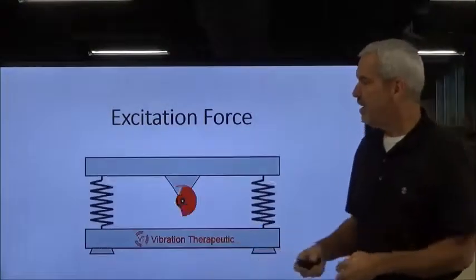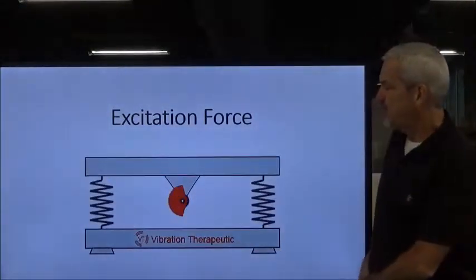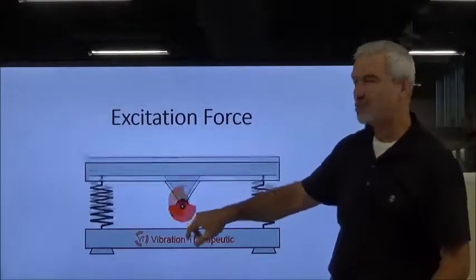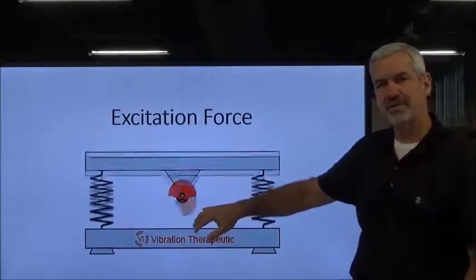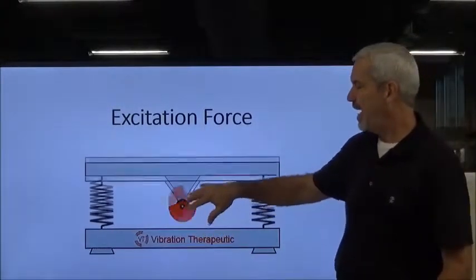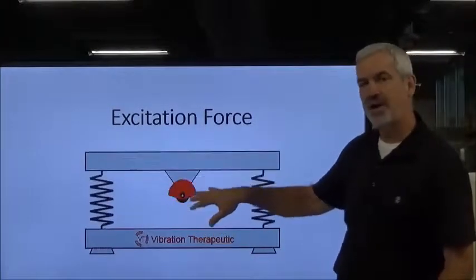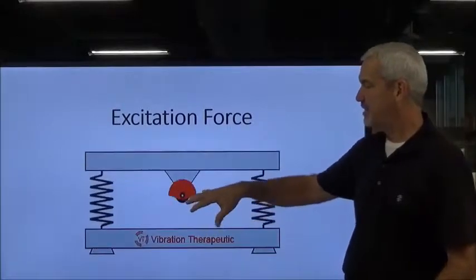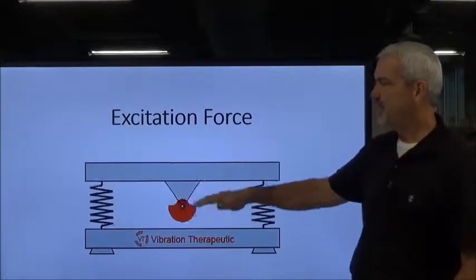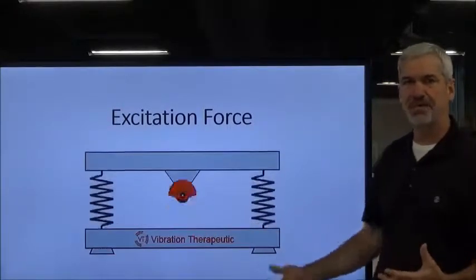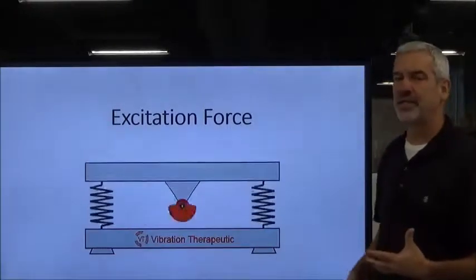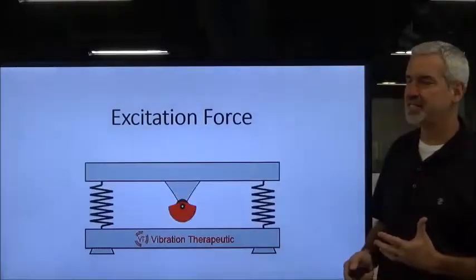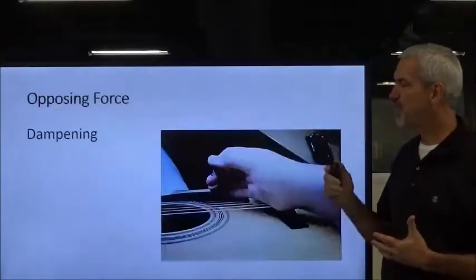Here's one more example. In this particular case we've got a ship that's got a chunk or flyweight missing out of it. It's out of balance and it's causing it to jump up and down. These are again examples of excitation force.